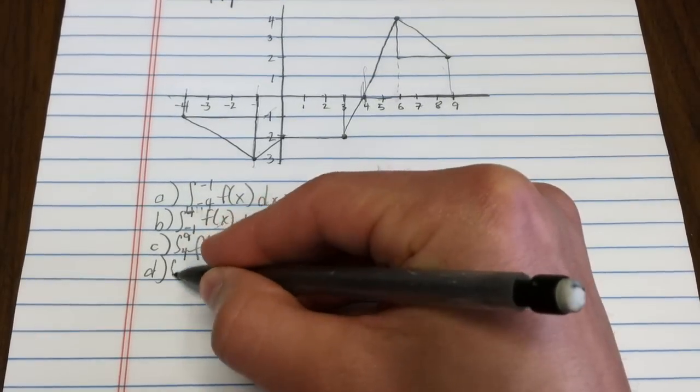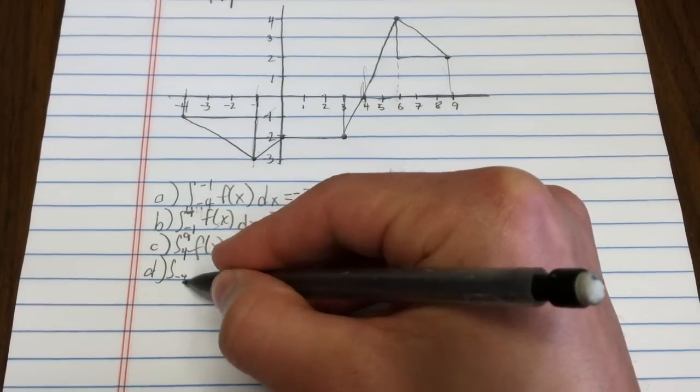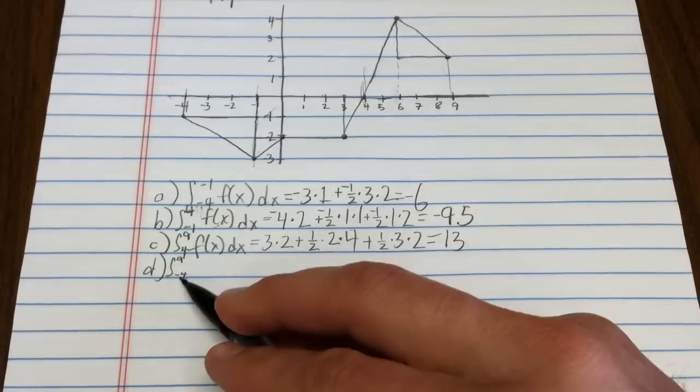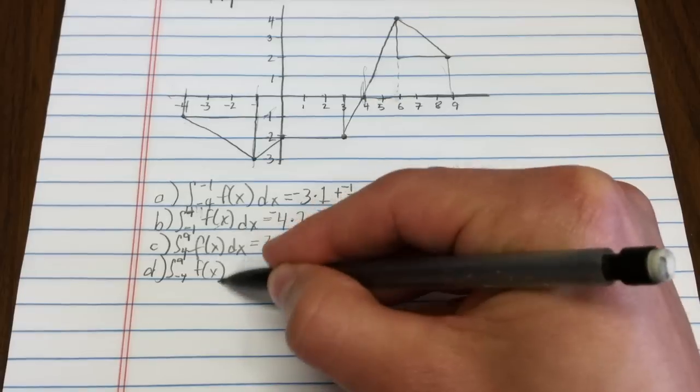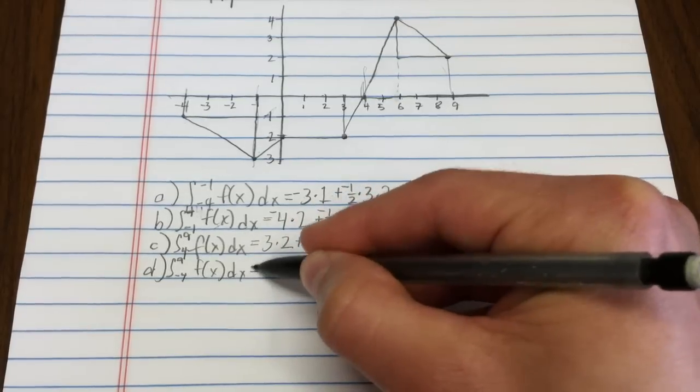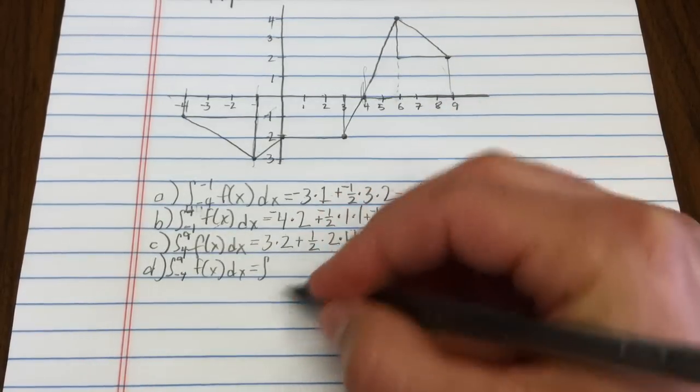Last but not least, it asks me to calculate the integral from negative 4 all the way to 9. Now, you can actually break that apart into the sum of the last three integrals.